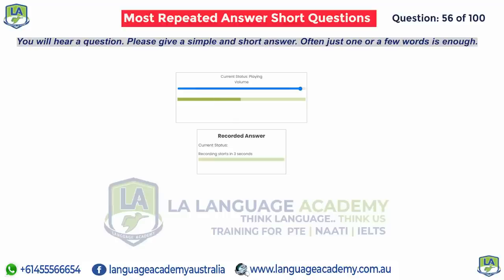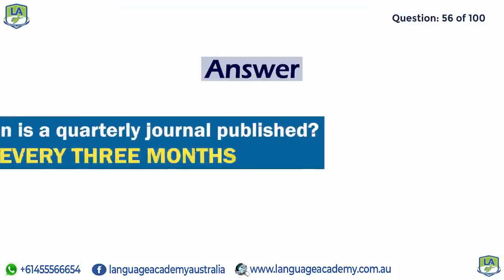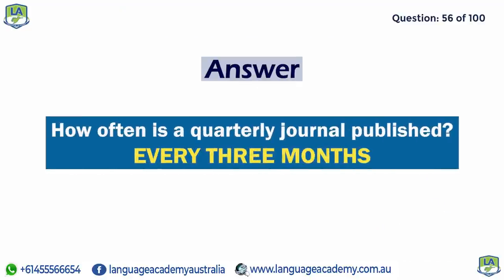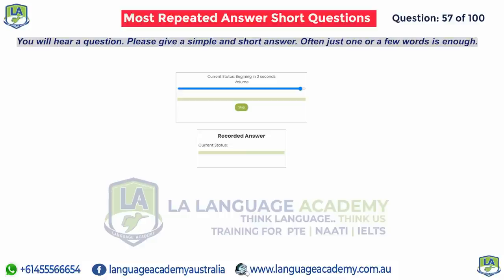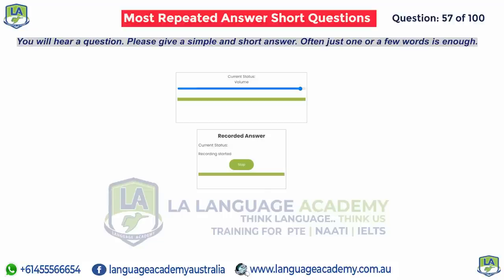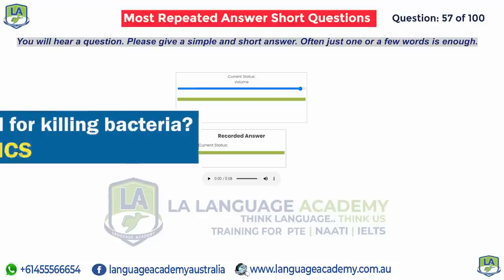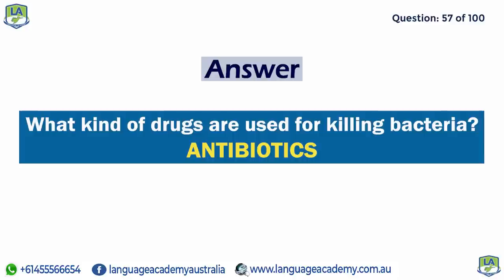How often is a quarterly journal published? Every three months. What kind of drugs are used for killing bacteria? Antibiotics.